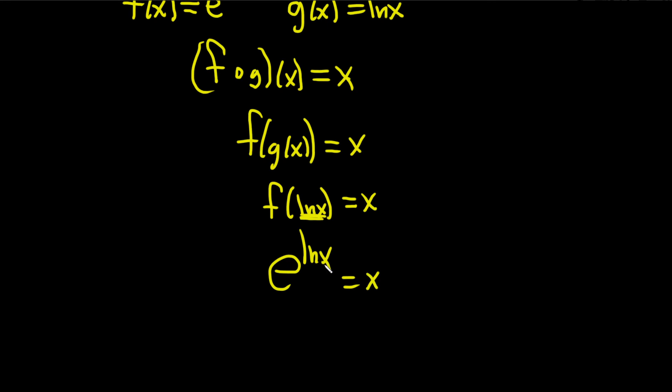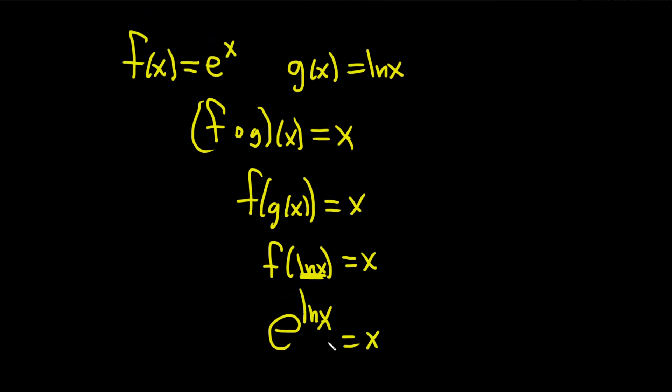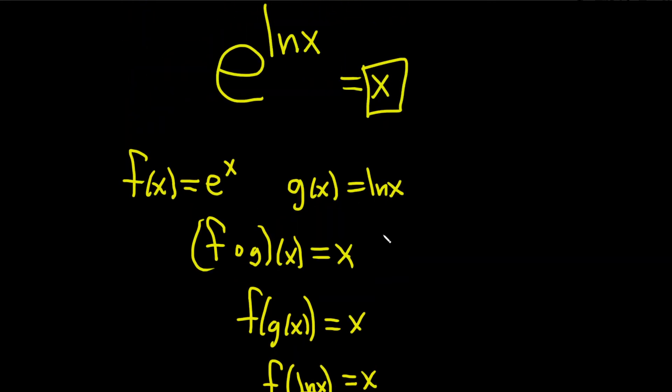And so the reason you get x is because these are inverse functions and they undo each other. That's it.